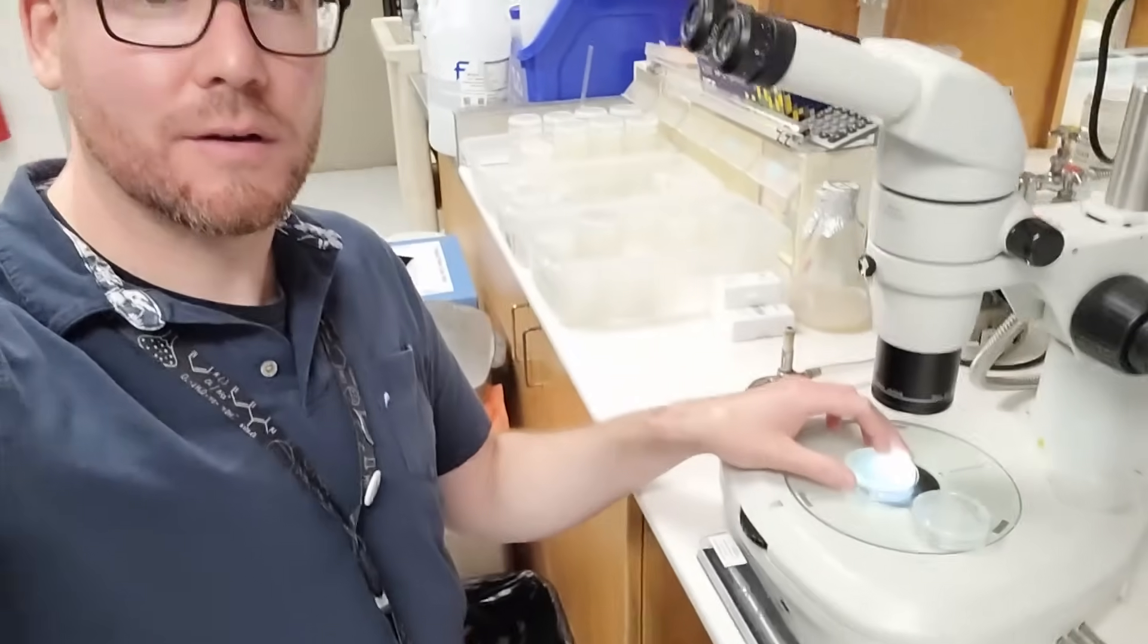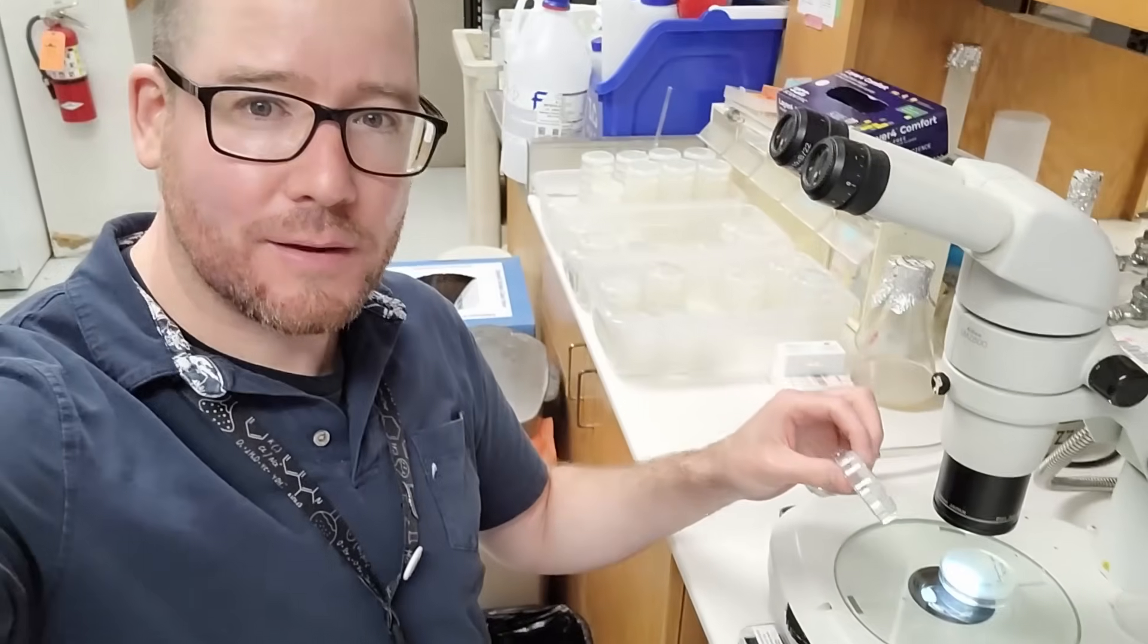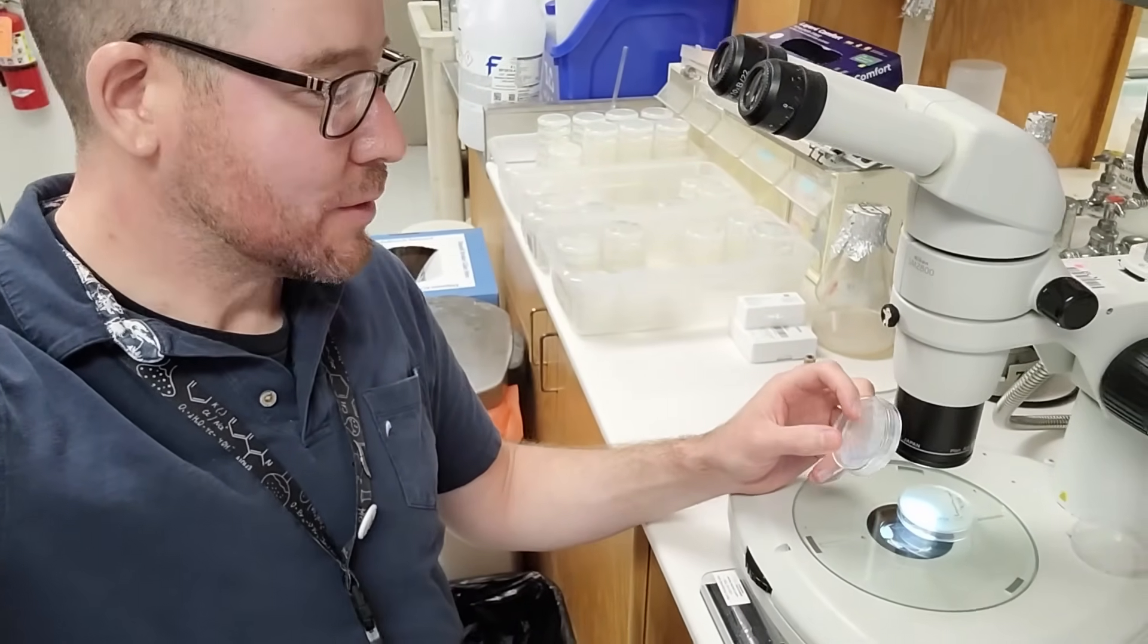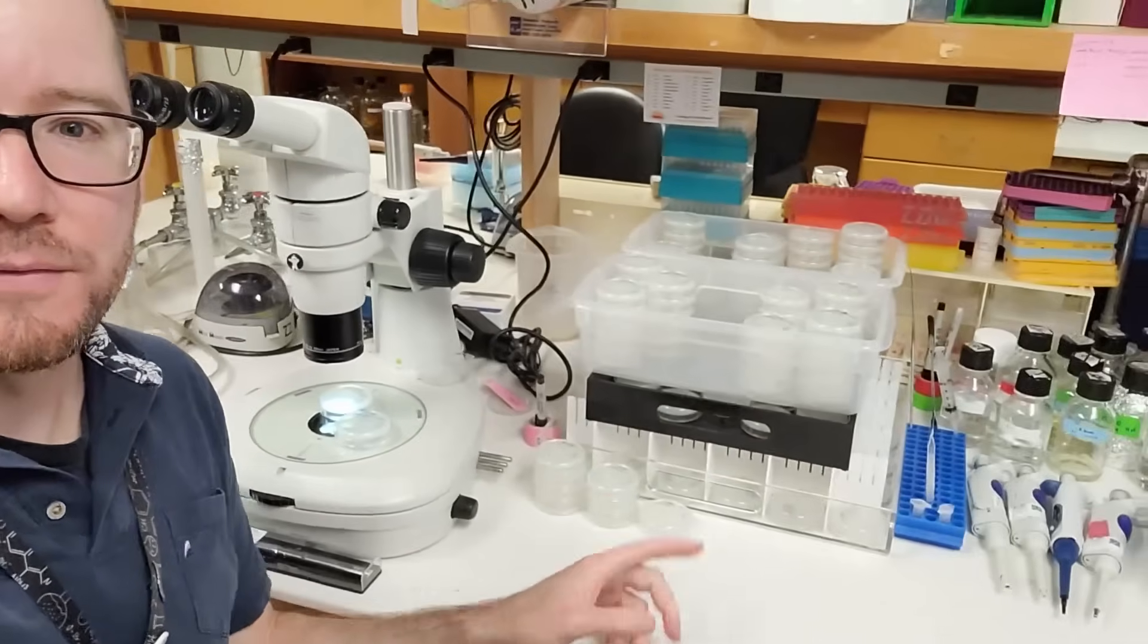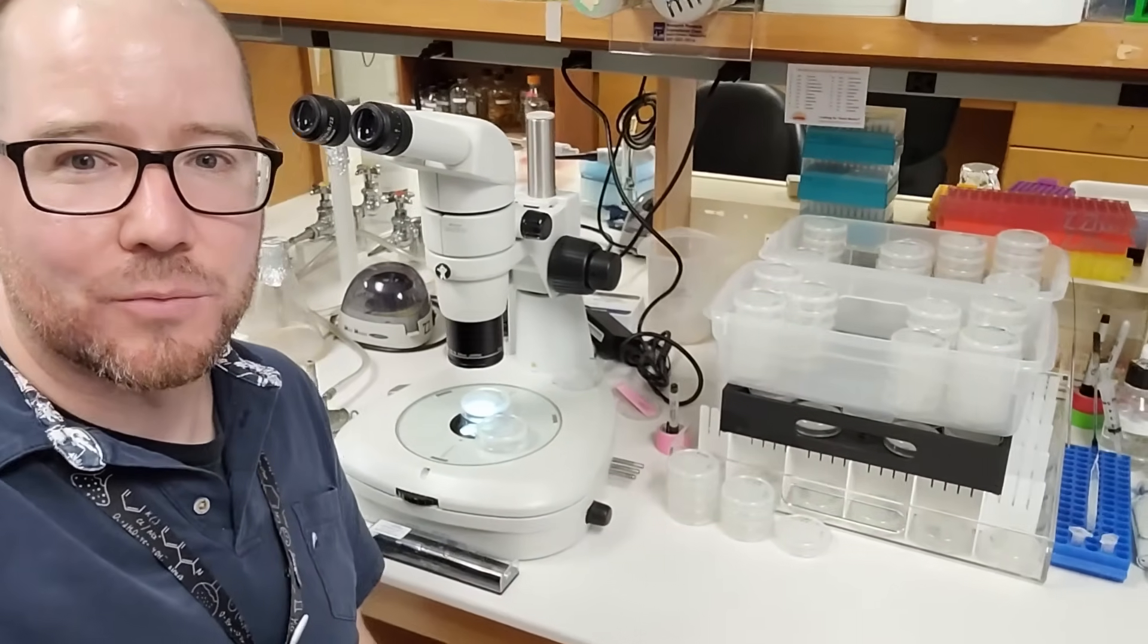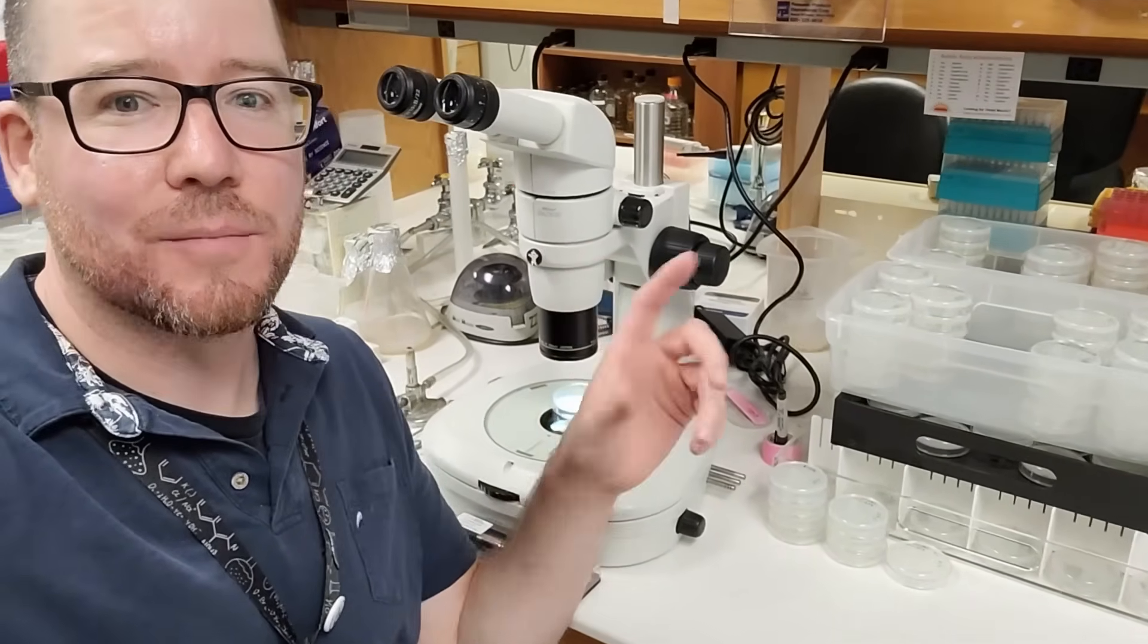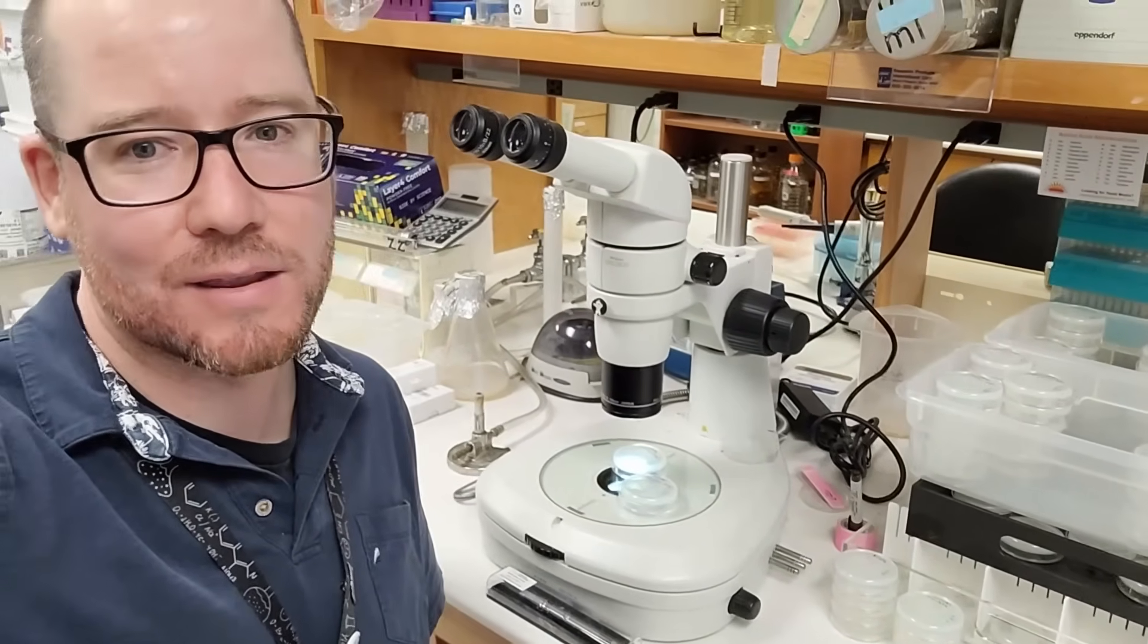And so the way that we do that, we have these little plates that we put bacteria on and that bacteria is what our worms eat. As you can see, I've got some trays here. All of these have different worm strains on them. The ones I'm working with the most I have stacks of, but I have lots of other plates with different worm strains that I'm not actively working with.